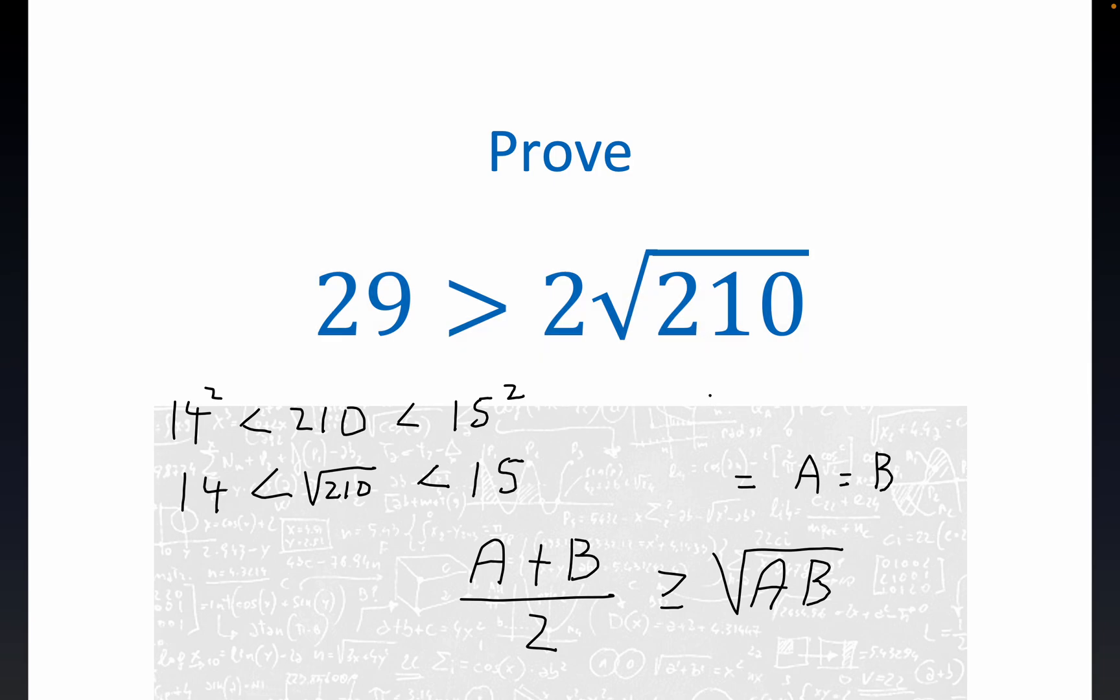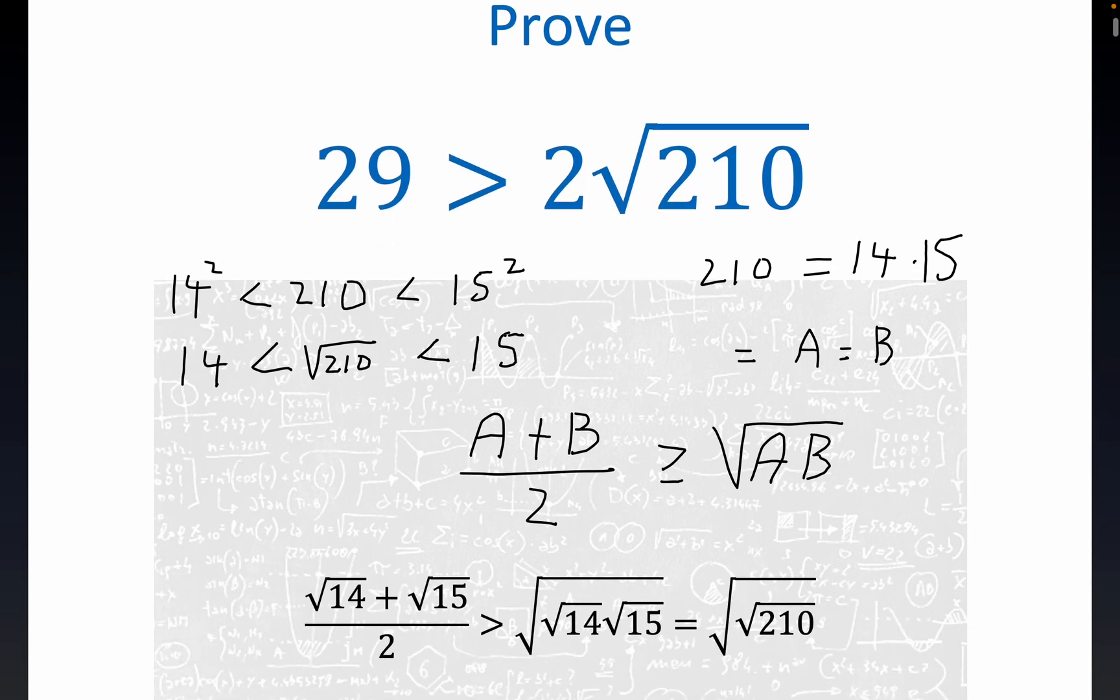Now that motivates looking for two numbers that are close together. So notice that 210 is equal to 14 times 15, and they're close to each other—they're not equal but they're close—and that's why you would expect this to be a tight inequality.